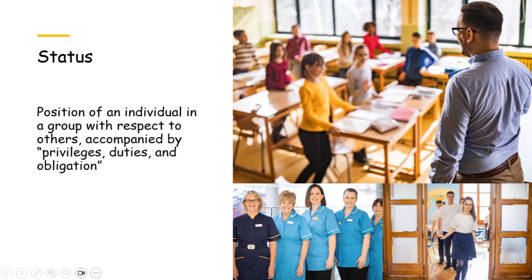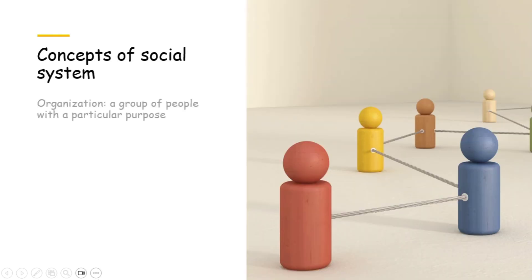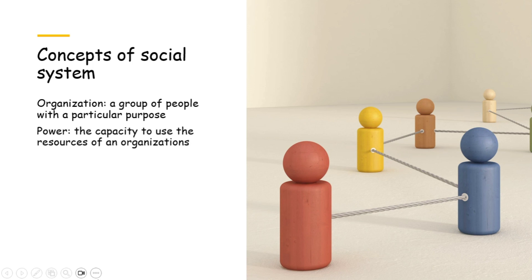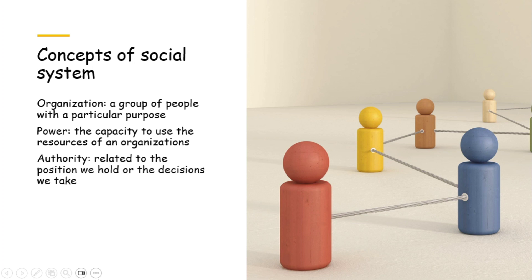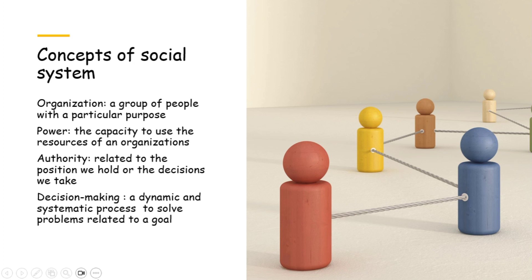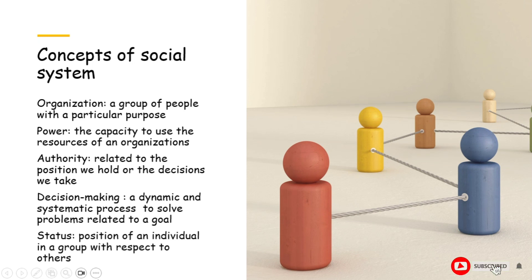So we have learnt the concepts of social system: organization — a group of people with a particular purpose; power — the capacity to use the resources of an organization; authority — interrelated with power and related to the position we hold or the decisions we take; decision making — a dynamic and systematic process to solve problems related to a goal; and lastly, status — the position of an individual in a group with respect to others. If you find this video useful, please like and share this video and subscribe to my channel.